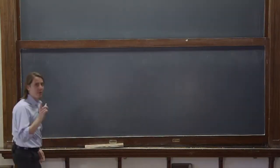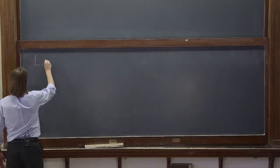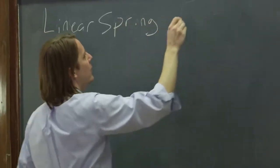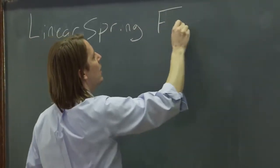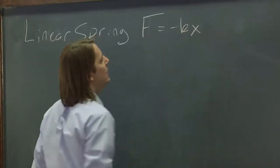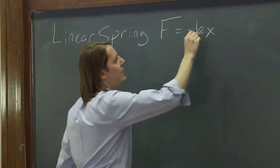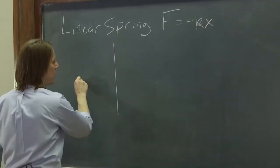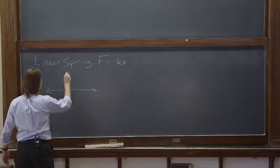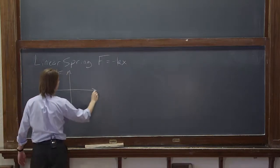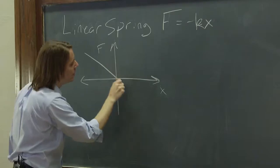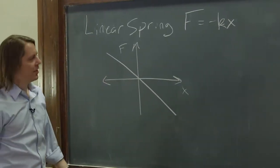We started simple harmonic motion with a linear spring that we described with Hooke's law, f equals minus kx. And what I mean by linear, you can see if we plot the force as a function of x, it's a line like this. It goes through the origin with a slope of minus k.